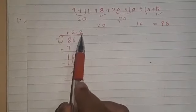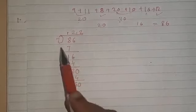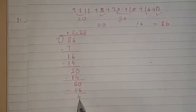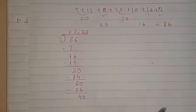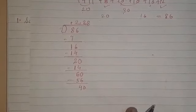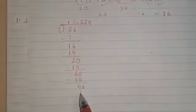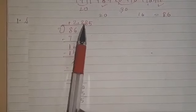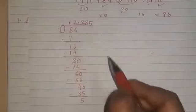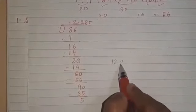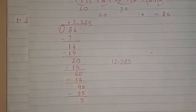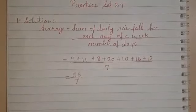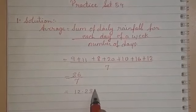After the first decimal place we continue. 7 eights are 56, remainder 4. Add a 0. 7 fives are 35 and 7 sixes are 42 — we use 7 fives: 35, remainder 5. We are not getting remainder 0, so we stop because we have found 3 decimal places. The answer is 12.285. So we write: average is equals to 12.285 millimeters.